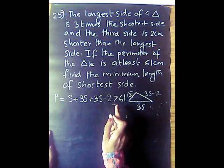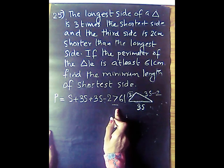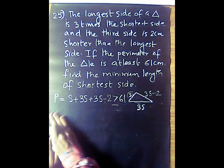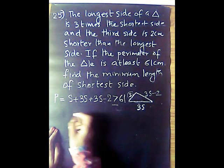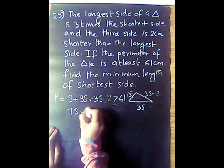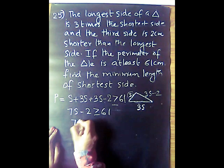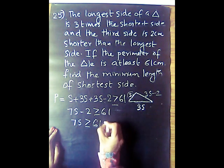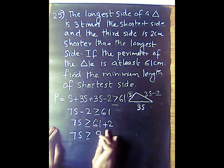Adding the terms: s plus 3s plus 3s minus 2 gives 7s minus 2 is greater than or equal to 61. So 7s is greater than or equal to 61 plus 2, which means 7s is greater than or equal to 63.